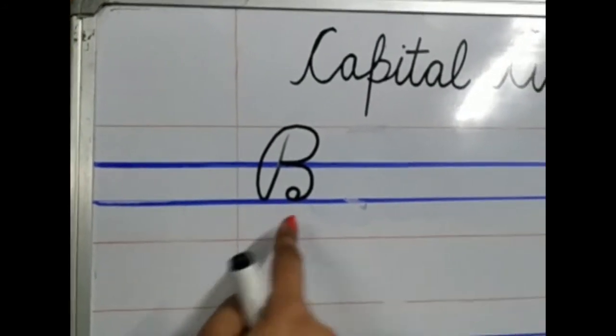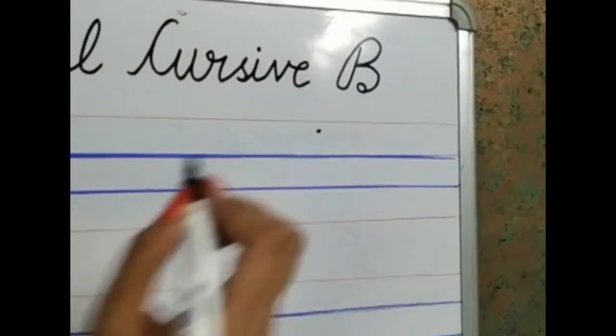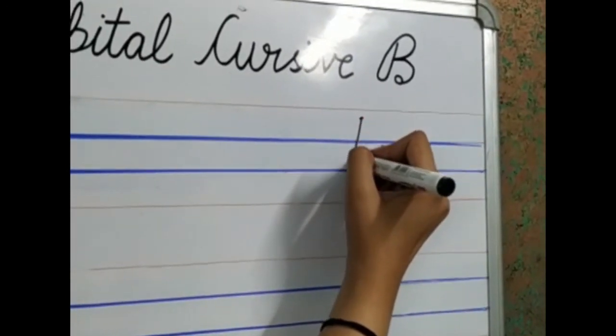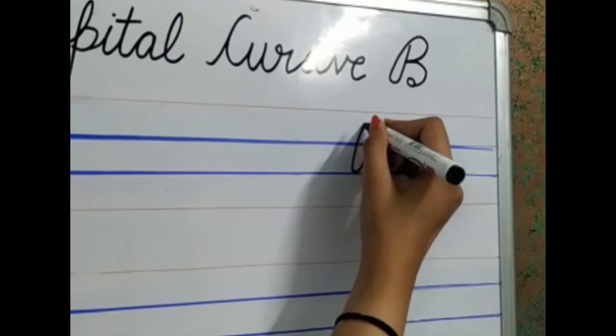Let's write it one more time. We will put a dot here. Okay. Let's make a slanting line. And you will not lift up your pencil. Slanting line till the blue line. Make a loop.